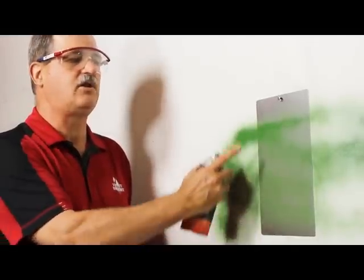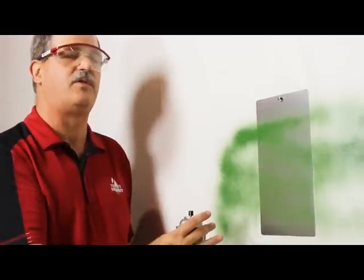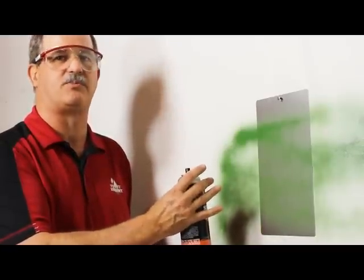So this light mist coat, you can see it looks like dots on the surface. It doesn't look like I'm trying to cover the piece of metal with the paint. That light mist coat is going to lay down the foundation for a great finish with this product.